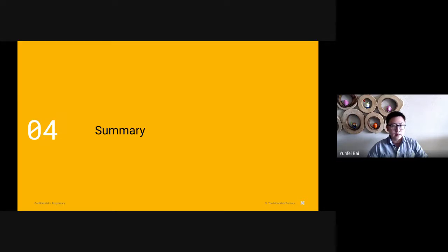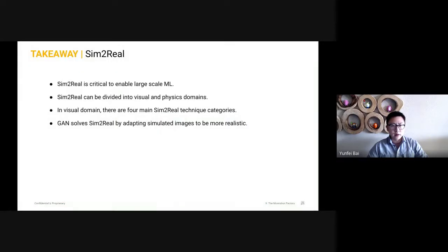So to summarize, we need to solve sim-to-real, which is the problem of domain transfer from training the virtual world to execution in the real world. The ideas we talked about today: sim-to-real is critical to enable large-scale machine learning. The problem can be divided into visual and physics domains. In visual domain, there are four main sim-to-real technique categories. They are domain randomization, using different visual representations, feature-level domain adaptation, and pixel-level domain adaptation. In this talk, we focused on the last category and introduced a series of GAN works to solve sim-to-real. We showed that with GAN, we can adapt simulation image to be more realistic.